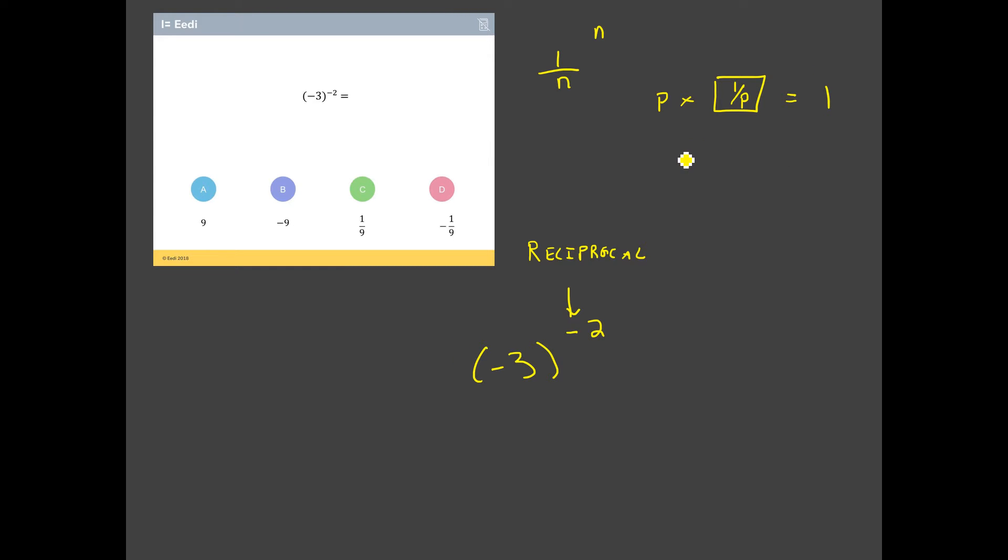So just a couple of examples of reciprocals. The reciprocal of five is a fifth. The reciprocal of negative a third is negative three. The reciprocal of two thirds is three over two and so on. So that's what that means. It's a code. It means do the reciprocal.